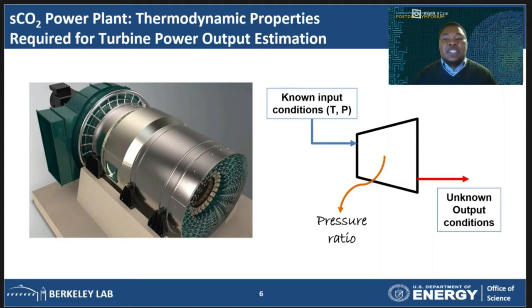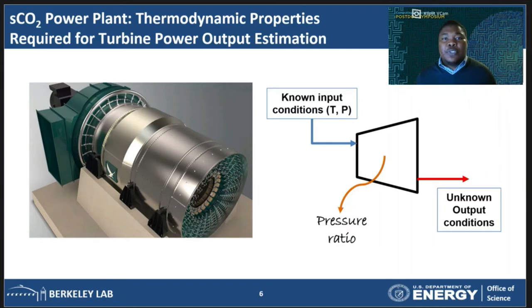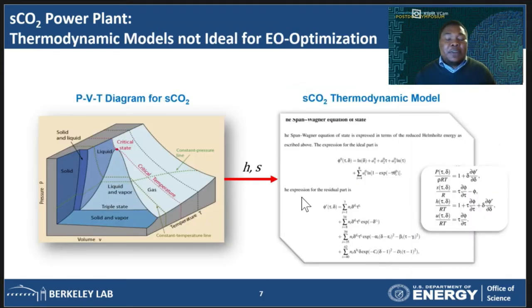However, that information only becomes available after we've run the turbine within the full power system, and we know nothing about the conditions of the turbine at the exit or downstream. Typically, to simulate a turbine, we need to be able to evaluate the thermodynamic properties of the operating fluid — in this case carbon dioxide — over the entire range of conditions within the system. The properties of fluids are usually given by a PVT diagram and the one for carbon dioxide is shown on the left here.